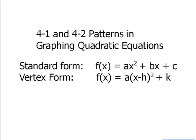What you need to know about standard form is that it has coefficients a, b, and c sitting in front of your variables x squared and x, while c is just a constant. For vertex form, f(x) = a(x - h)² + k. Your h and k give you the coordinates for your vertex, but remember to switch the sign of the h that you're presented with.